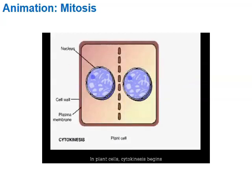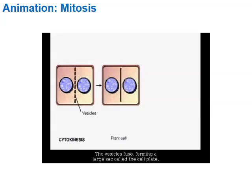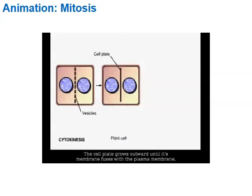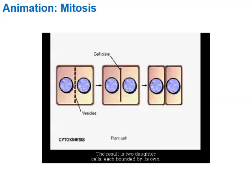In animal cells, cytokinesis begins with a cleavage furrow — a ring of microfilaments contracts like drawstrings, pinching the cell in two to create two identical daughter cells. In plant cells, vesicles containing cell wall material collect in the middle and fuse to form a cell plate, which grows outward until its membrane fuses with the plasma membrane, separating the two daughter cells.